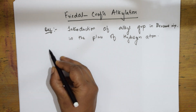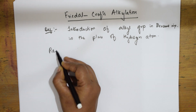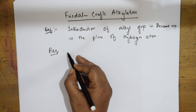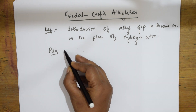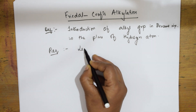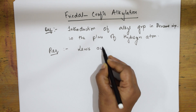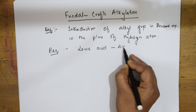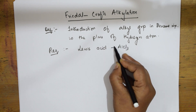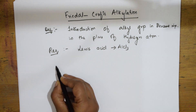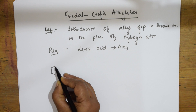For Friedel-Crafts alkylation, what are the requirements? This whole reaction occurs in the presence of a Lewis acid, that is aluminum chloride (AlCl₃). In the presence of this Lewis acid only, we are going to show the alkylation reaction.